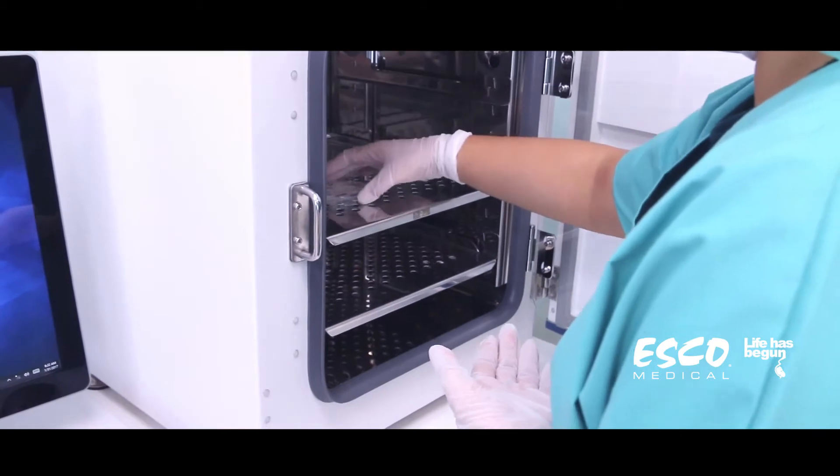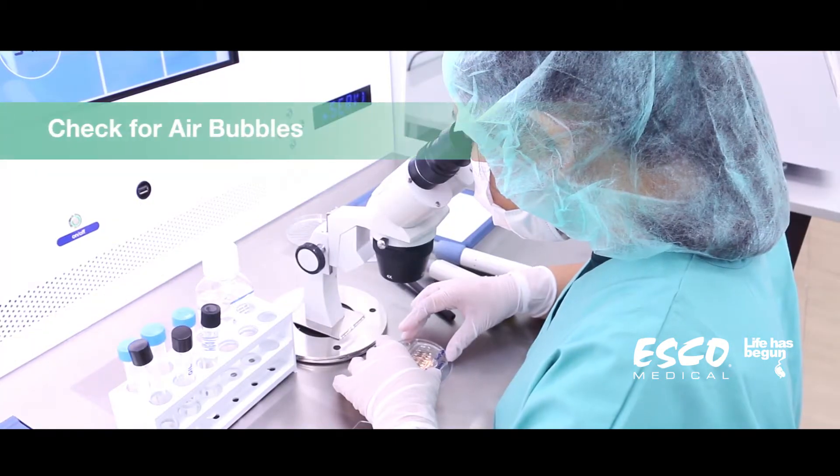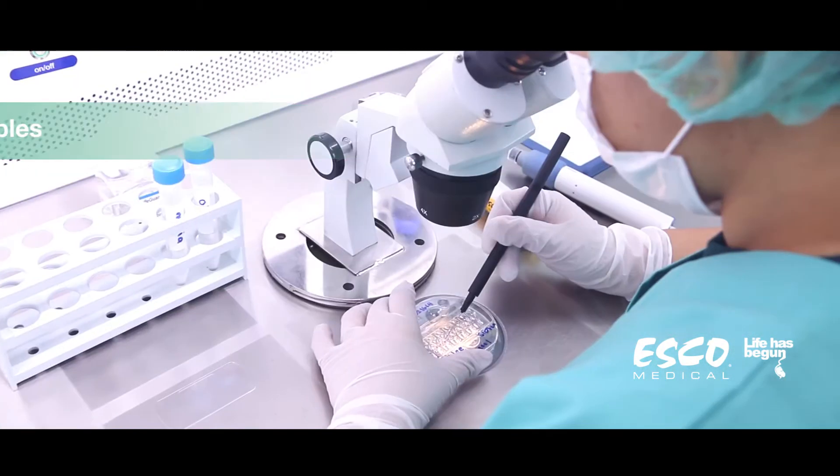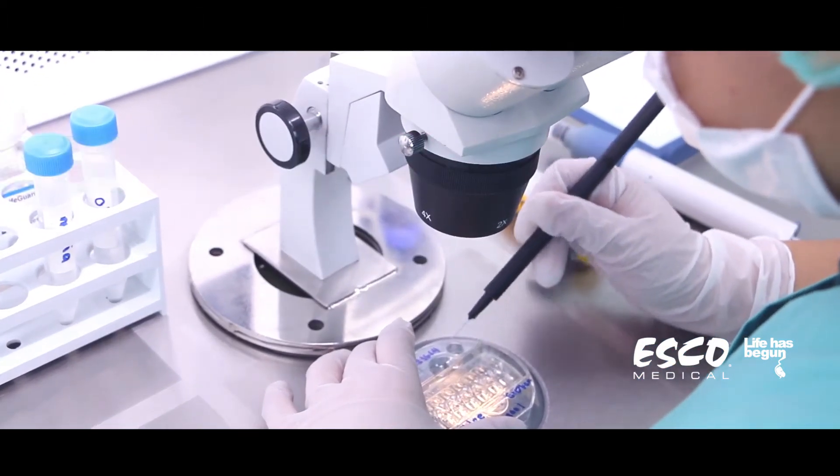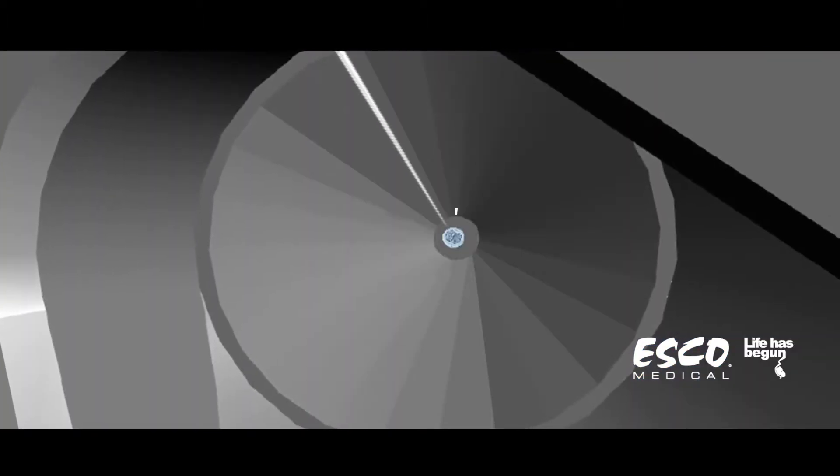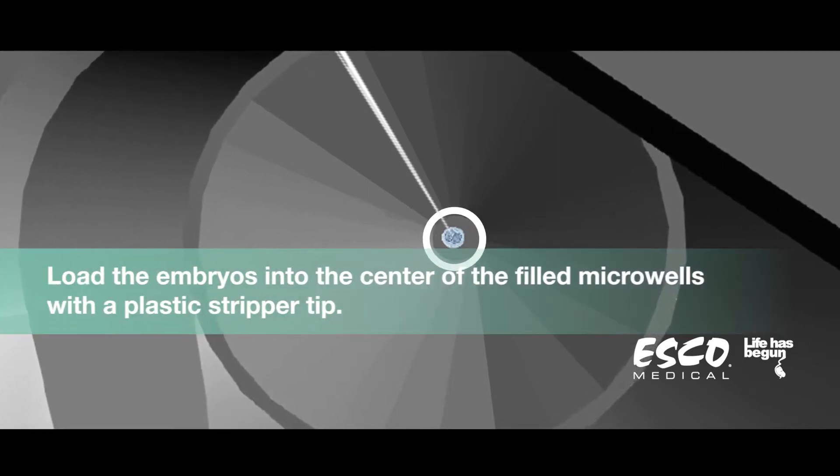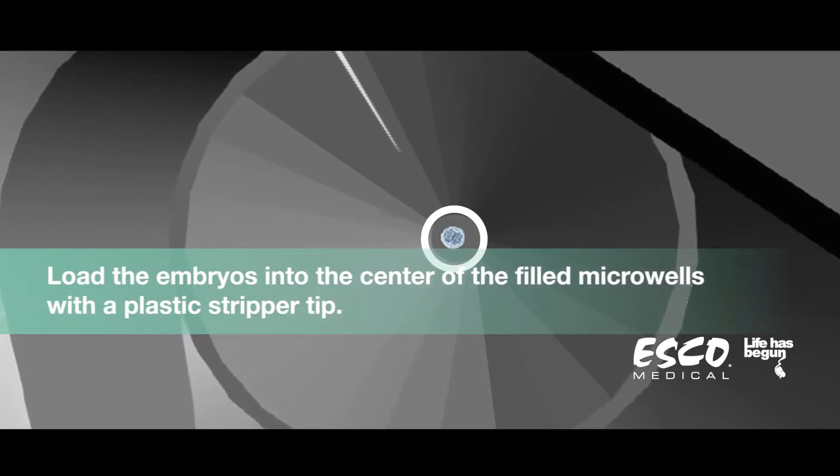Loading of embryos. After equilibration, check for air bubbles in the culture wells. Release any bubbles with the stripper tip and remove with the dispensing pipe tip. Then load the embryos into the center of the filled microwells with the plastic stripper tip.